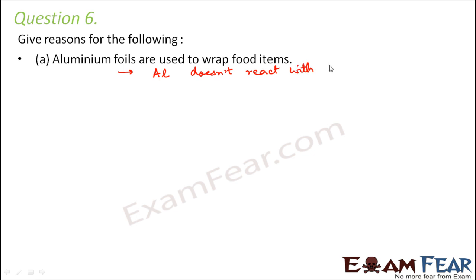Because if aluminium starts reacting with food, maybe it will turn the food into something else. It might turn it into poison. So aluminium doesn't react. So it is safe to keep food wrapped in aluminium foils. Secondly, why do we have aluminium foil? Because aluminium is malleable. That is, it can be beaten into thin sheets. And that is why we are able to make aluminium foils out of it.